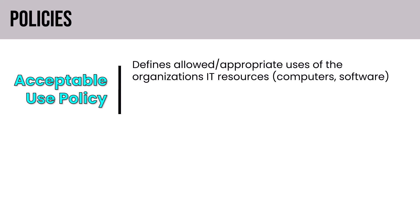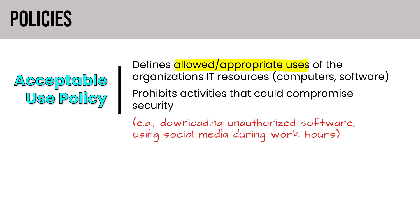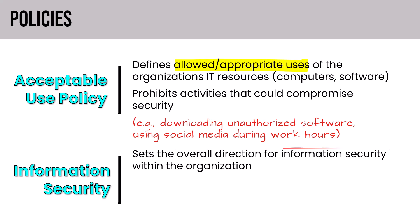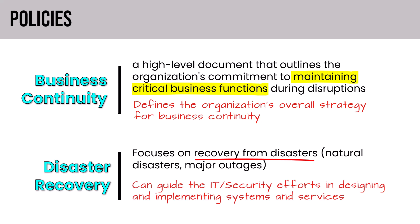The acceptable use policy defines allowed and appropriate uses of the organization's IT resources, and generally details prohibited activities that could compromise security — things like downloading unauthorized software or using social media during work hours. It's often a document that employees sign as part of onboarding. The information security policy sets the overall direction for information security within the organization, providing guidance to IT and security in designing and implementing systems and services and establishing the right amount of resilience and recoverability.